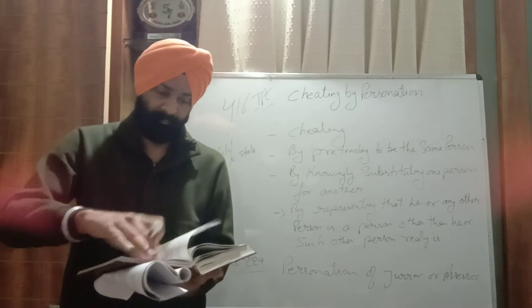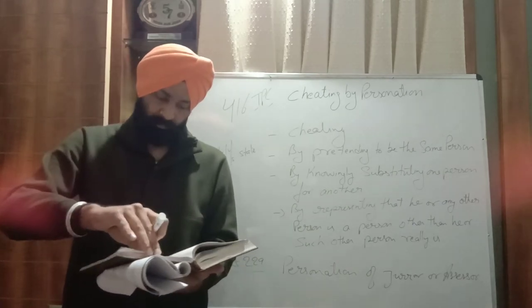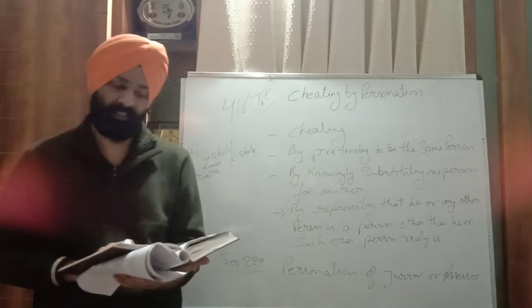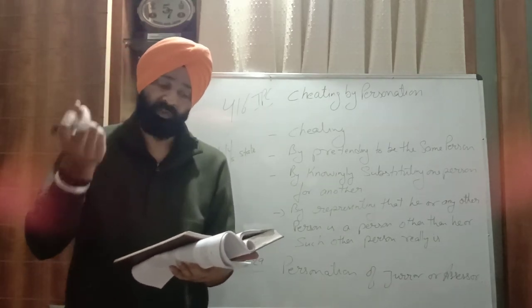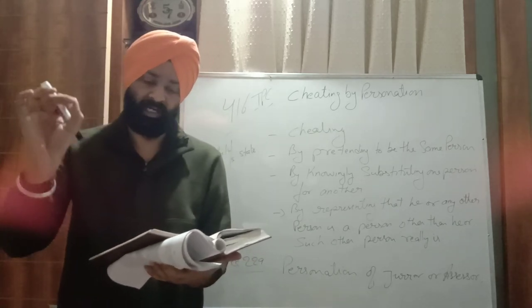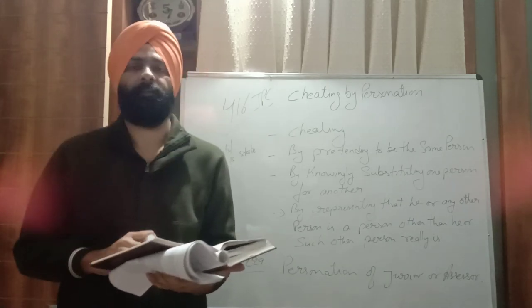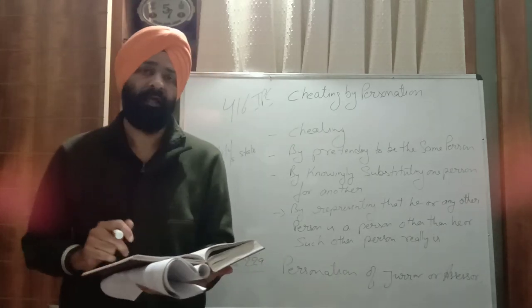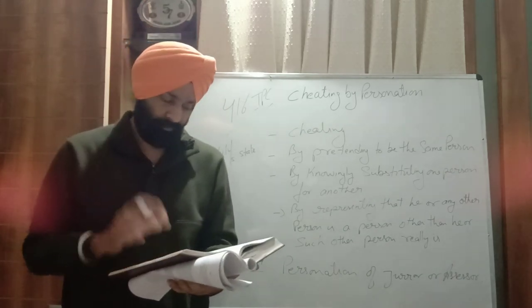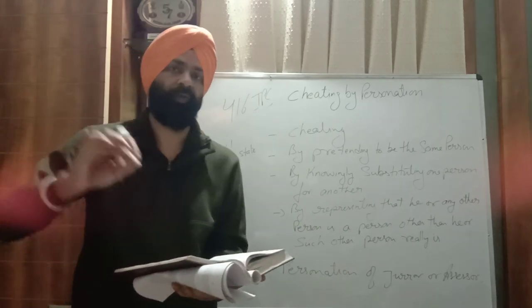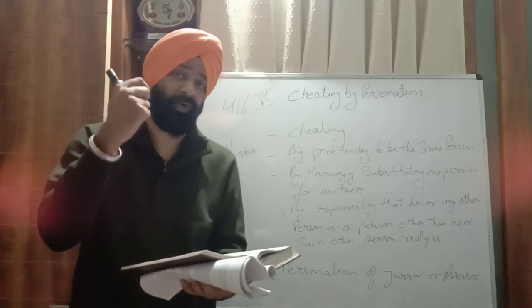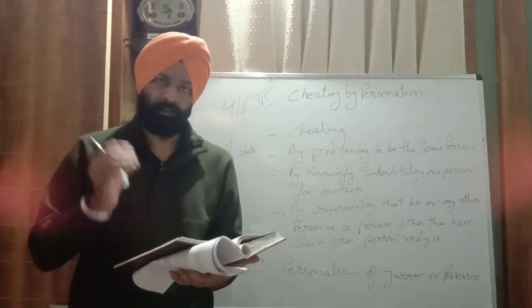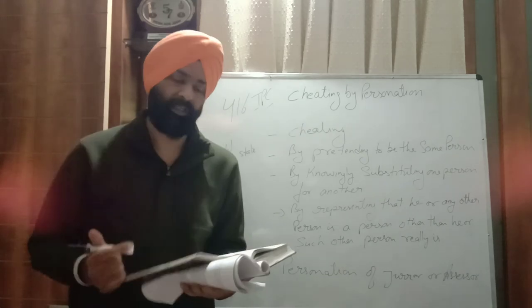Regarding Section 416, the punishment prescribed is given in Section 419: whoever cheats by personation shall be punished with imprisonment for a term which may extend to three years, or fine, or with both. This is similar to punishment for theft — three years maximum. When we discussed Section 415 cheating, the punishment for simple cheating is given in Section 417, which is only up to one year imprisonment, or fine, or both — a much lesser punishment.